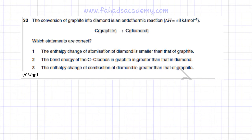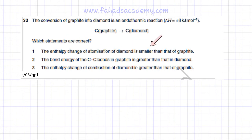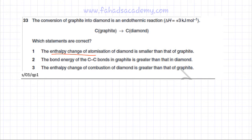The question asks which statements are correct. The first statement given is that the enthalpy change of atomization of diamond is smaller than that of graphite. Let's focus on this first statement.